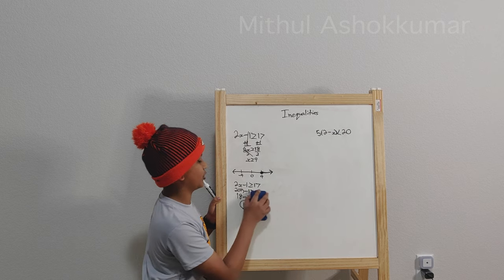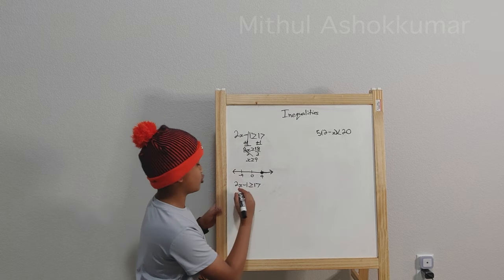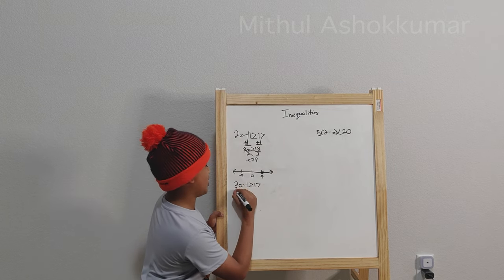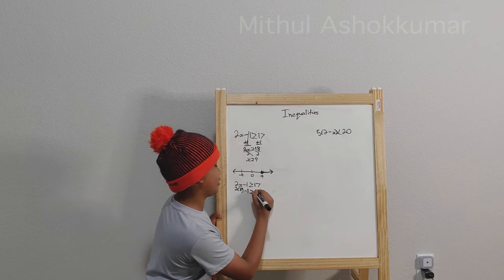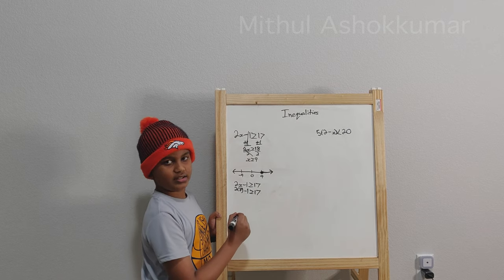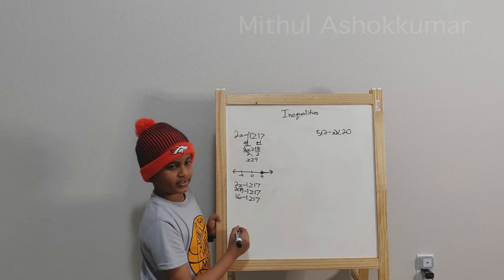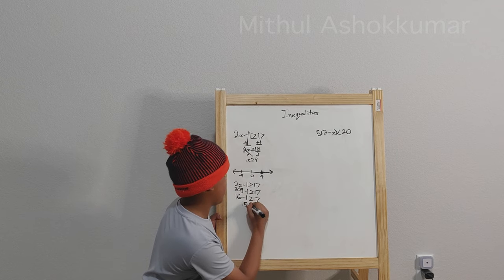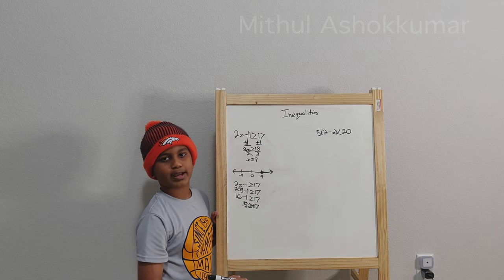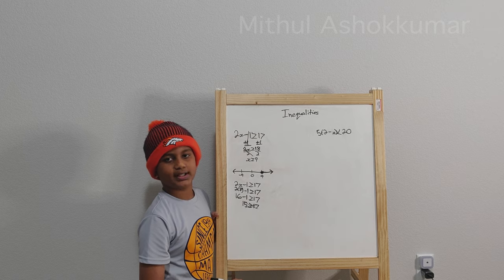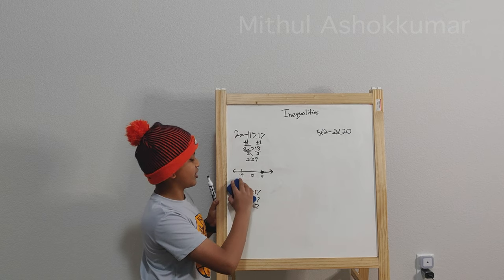But what about something that does not work? Let's take 8, which is the nearest number to 9. So 2 times 8 — because we're talking about x equals 8 — minus 1 is greater than or equal to 17. 2 times 8 equals 16. 16 minus 1 equals 15, which is greater than or equal to 17. Is this true? Nope. 15 is not greater than and is not equal to 17 — it is less than 17. So that is why 8 doesn't work.